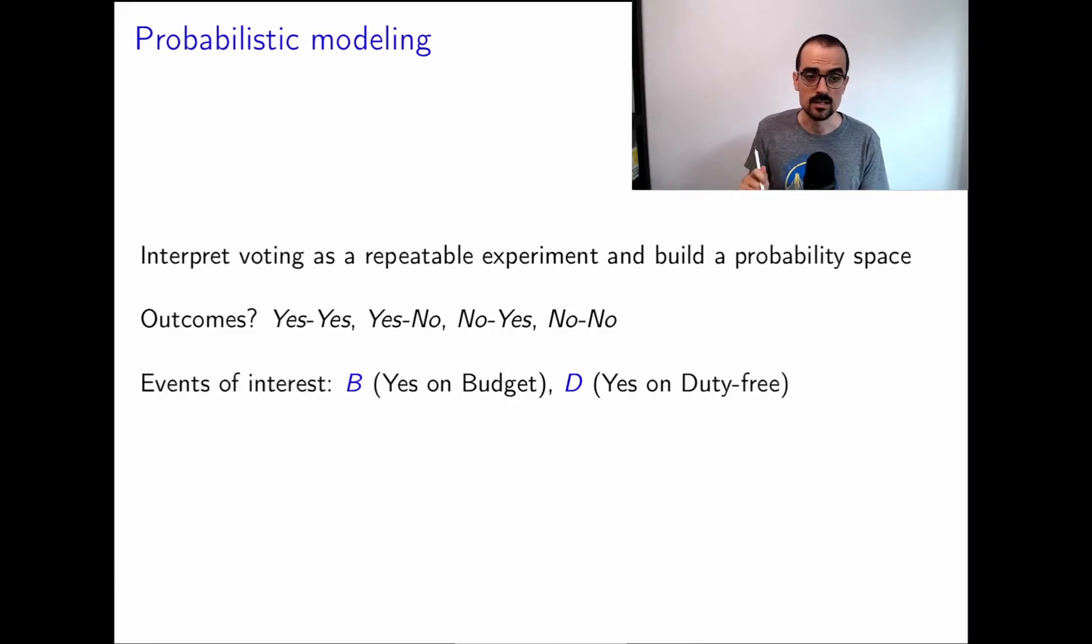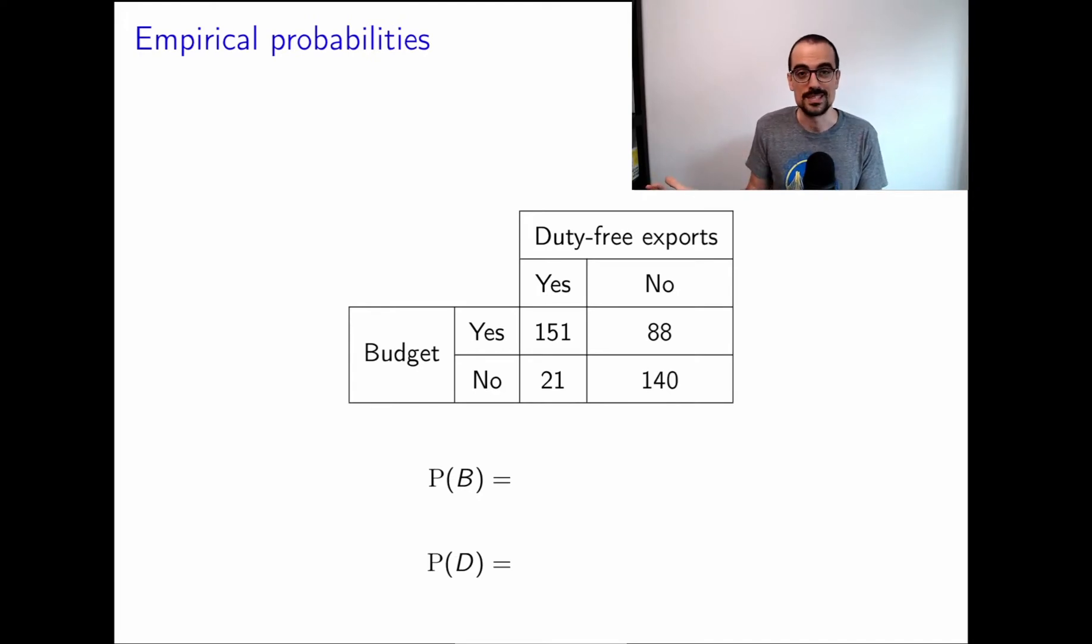So the events of interest are B, yes on budget, and D, yes on duty-free. So now we need to estimate this thing. So the probability of B, we have to count how many votes were yes for B, which would be, let me get this right, 151 plus 88, and we're going to divide it by the total number of votes. That's the empirical probability of this event B. The sum of this and this is hopefully 239. The sum of all of them is 400. So the empirical probability of B is 0.598. We do the same for D. And again, I encourage you to try to do this on your own, pause the video, try to do it quickly on your own and see if you get the same answer. The votes that were yes for D are these guys, so 172 divided by 400, which I cannot do in my head, it's 0.43. Those are the empirical probabilities.